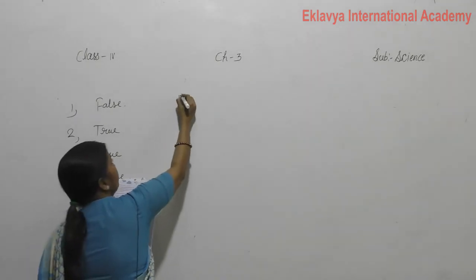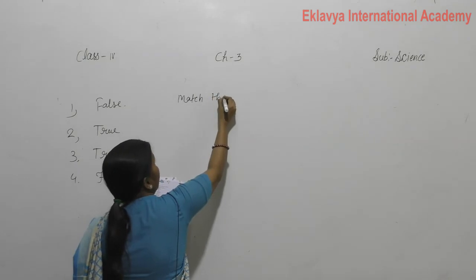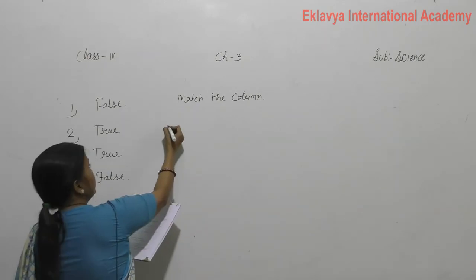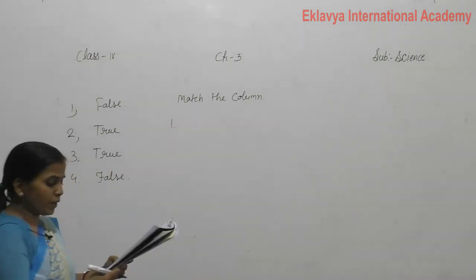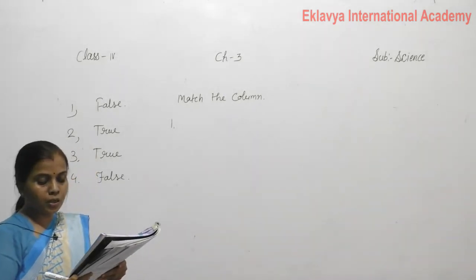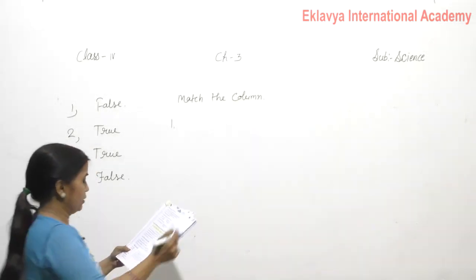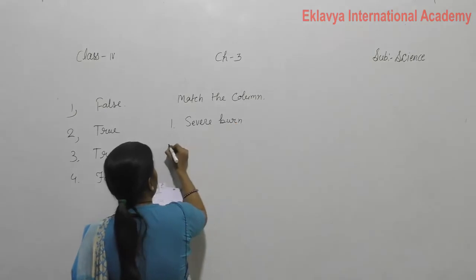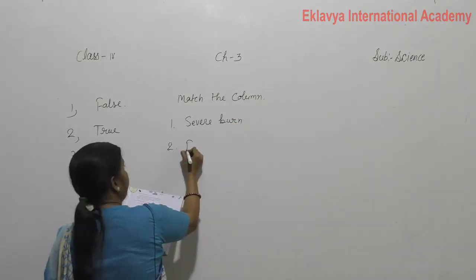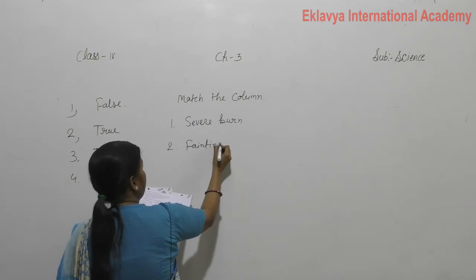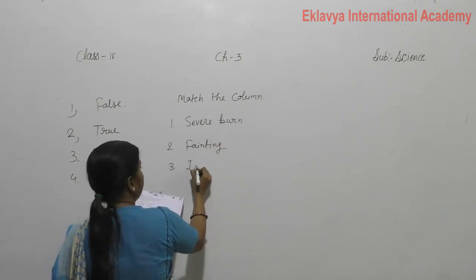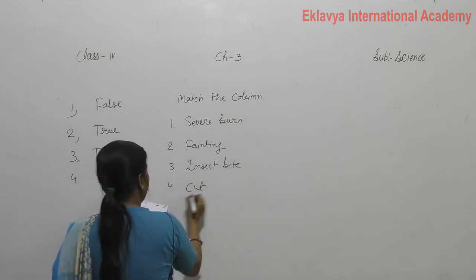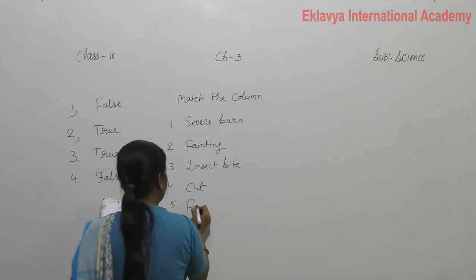Match the column. First is severe burn. Second one is fainting. Third one is insect bite. Fourth one is cut, and fifth one is food poisoning.